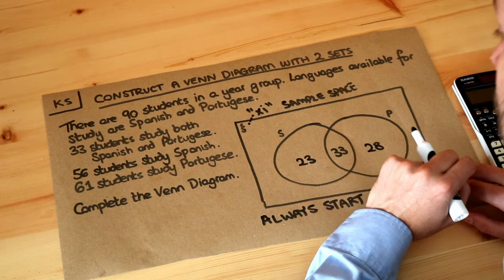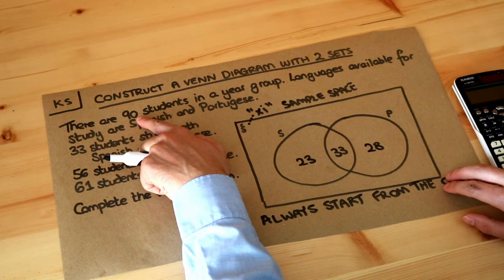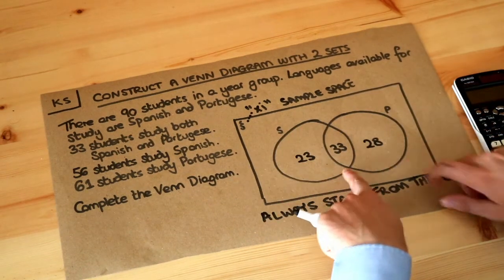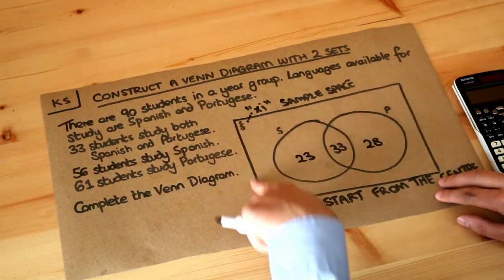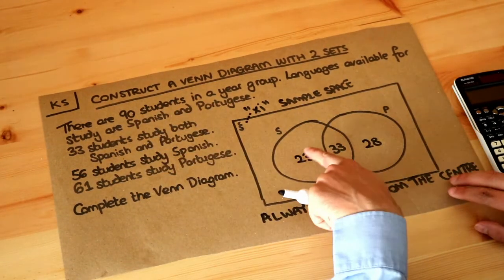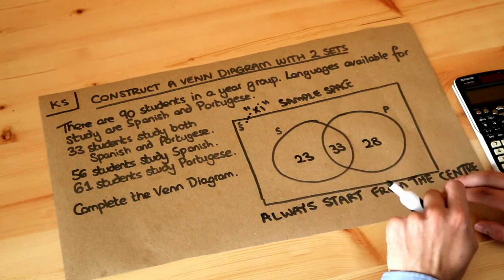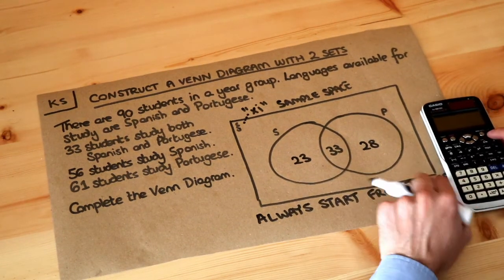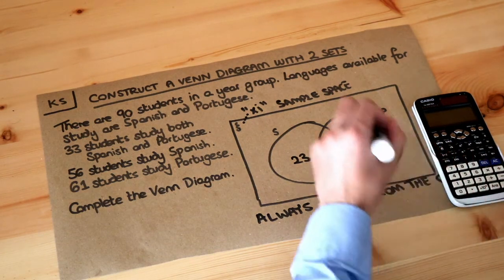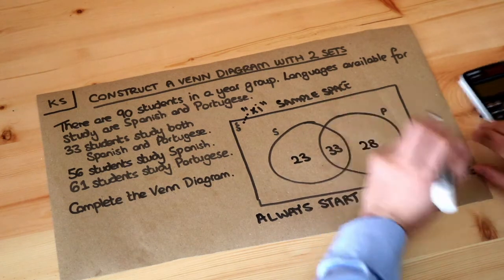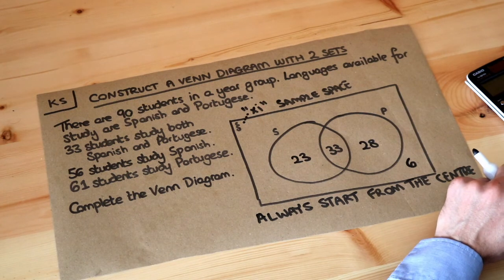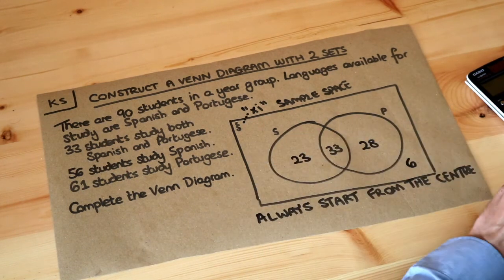Finally, we know there are 90 students in total. To find the number outside both circles, we subtract the three regions from 90: 90 minus 23 minus 33 minus 28 equals 6. So 6 students study neither language. Remember: always start from the center of the Venn diagram and work your way outwards.